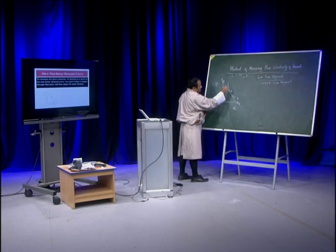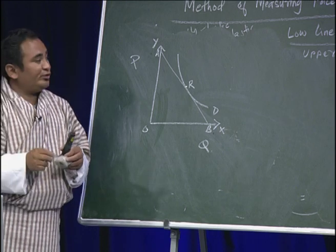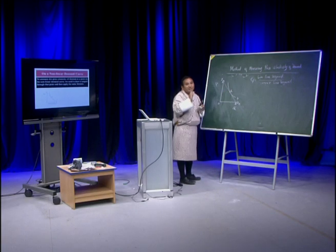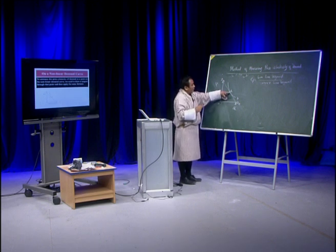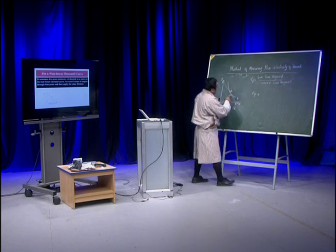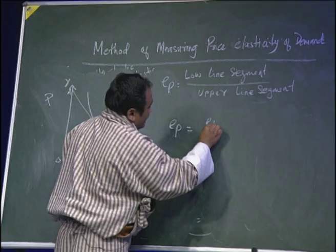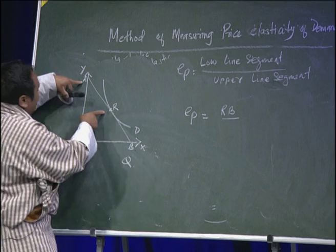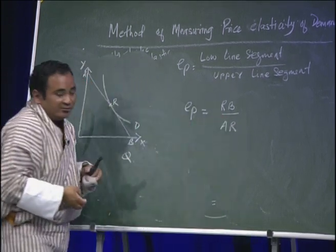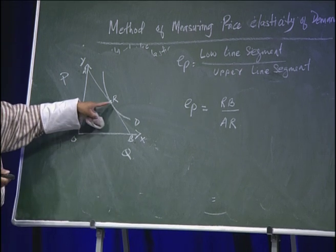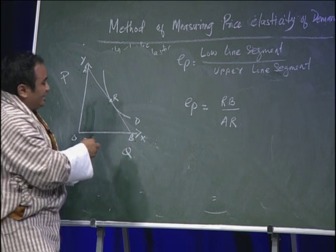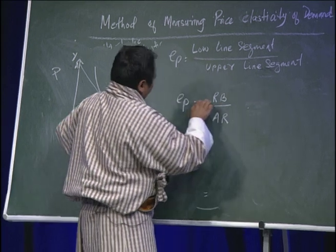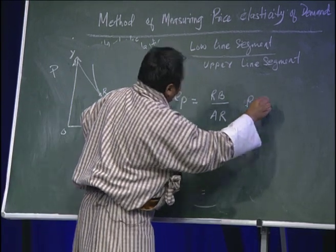Your tangent line is AB. Use the same formula to calculate, but keep the tangent point in mind. EP equals RB — lower segment RB — divided by upper segment AR. Since R is in the middle of A and B, if we assume RB is equal to AR, then the numerator is equivalent to the denominator, so you will get 1.